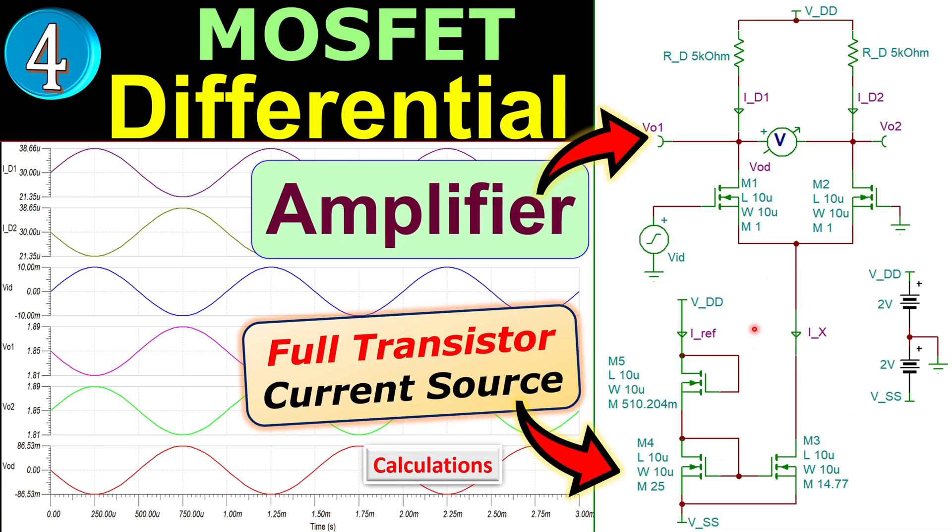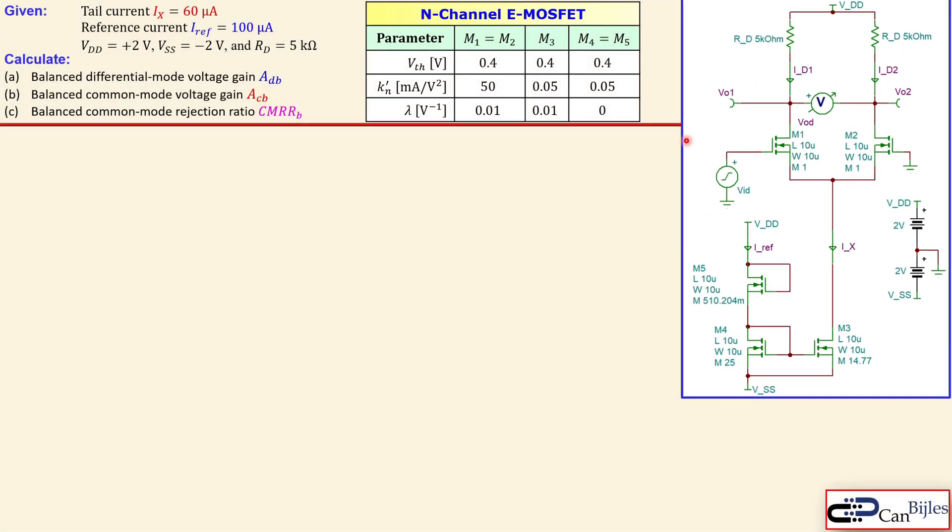Of course, we will see that step by step in our calculations and also verify this in SPICE simulations. So this is the circuit. We have the differential pair again using five n-channel enhancement type MOSFETs. The parameters for the MOSFETs are shown here. The threshold voltage for each is 0.4 volts. The K_n, the smaller K_n which is the process parameter, is 50 milliamps per square volt for M1 and M2. For the other three, M3 to M5, it is 0.05 milliamps per square volt. The channel length modulation for M1 and M2 is 0.01, also valid for M3. But for M4 and M5, it is 0.